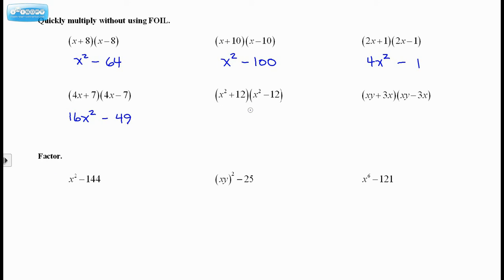This one, 16x squared minus 49. And if you're not too comfortable with this, feel free, just FOIL it out. This one, I'm going to get x to the 4th minus 144. This one, getting uglier, but again, it follows the same pattern. Here I will have xy all squared minus 9x squared. Of course, I can square both of these individually. So you could also write it as x squared y squared minus 9x squared. So just some quick multiplication.